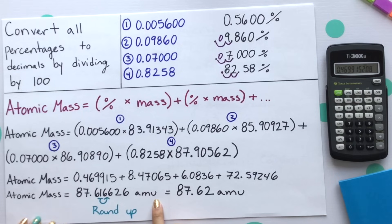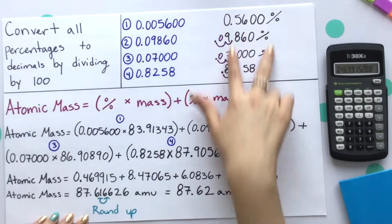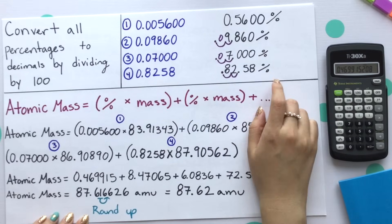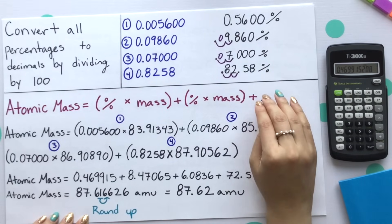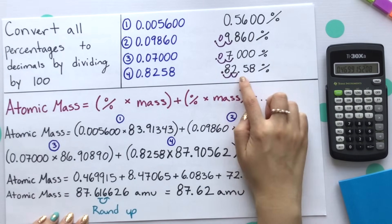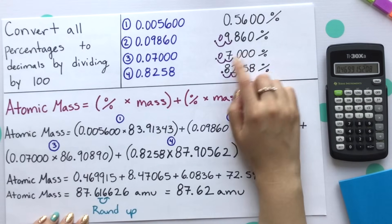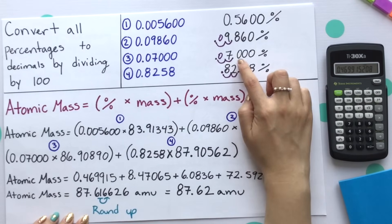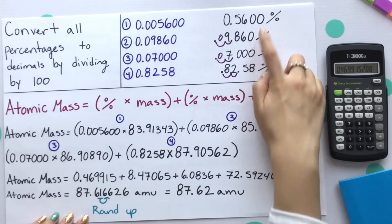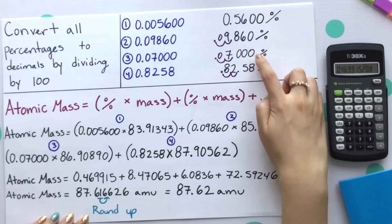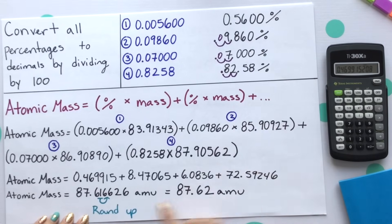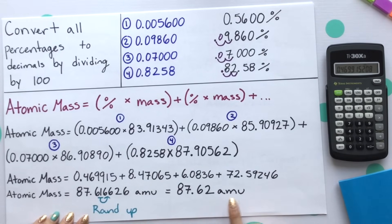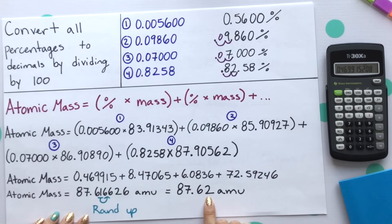The reason why we're going to round to only four sig figs is because going back to our given, we actually only had four significant figures. 82.58 is four sig figs, same with 7.000, and you'll see that every single one actually has four sig figs. So we'll round up and our final atomic mass is 87.62 AMU.